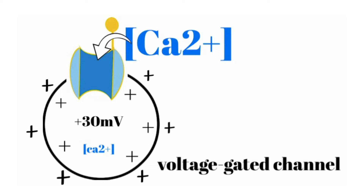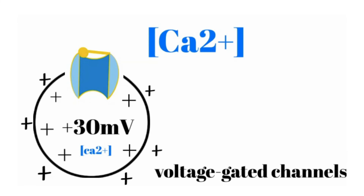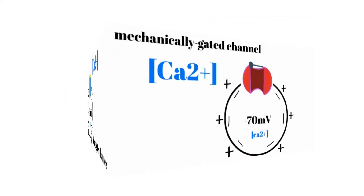We see voltage-gated channels in a number of places in the body — in neurons, where a change in voltage allows propagation of the electrical potential from one end of the neuron to the other, and also in skeletal muscle and cardiac muscle. These gates open and close very briefly — it's a fleeting moment, but enough time for calcium to move into the cell. Then eventually the cell will repolarize.